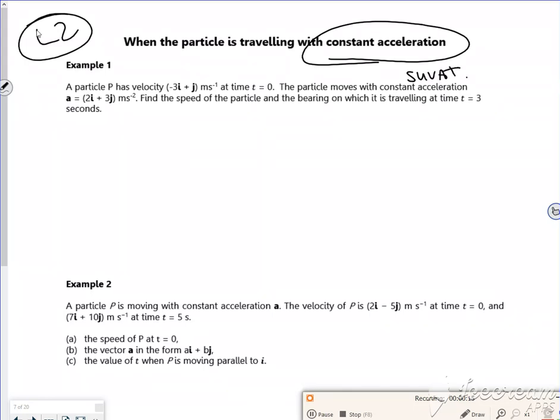So that's all good for us. Right, so it says particle P has a velocity of -3i + j at time t = 0. The particle moves with constant acceleration of 2i + 3j. Find the speed of the particle, so I want the speed, and the bearing of which it travels when t is 3.